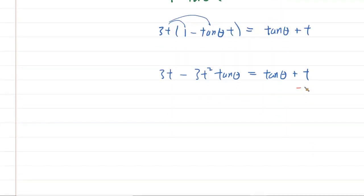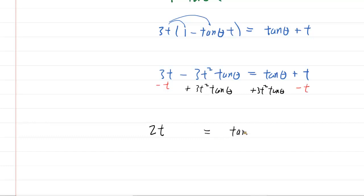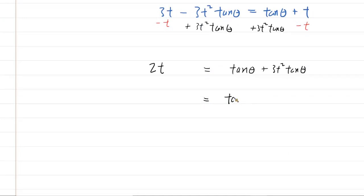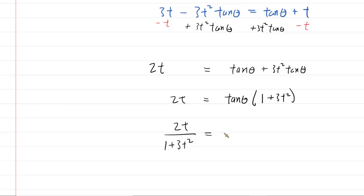To solve for tangent of theta, we gather all the tangent theta terms to one side. We subtract t from both sides, giving us 2t on one side. Then we add 3t² times tangent of theta to both sides, giving us tangent of theta plus 3t² tangent of theta. We can now factor out a tangent of theta, leaving (1 + 3t²). Finally, divide by (1 + 3t²) to isolate tangent of theta, and now we are ready to follow the hint.